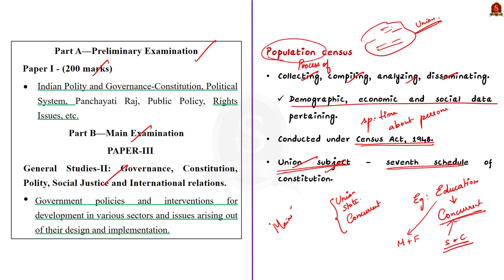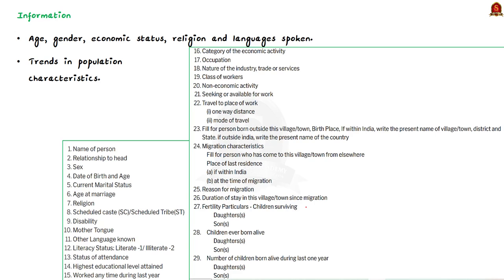What information does the census provide? It provides age, gender, economic status, religion, language spoken, etc. It also provides trends in population characteristics. To know more about what data can be obtained from the census, have a look at these tables. These are the questions that were asked in the 2011 census — see how many questions have been asked. Even migration details were also collected.